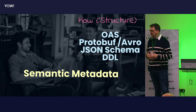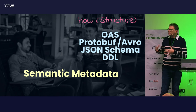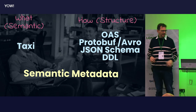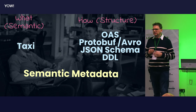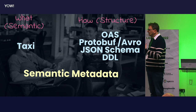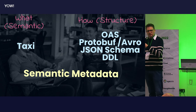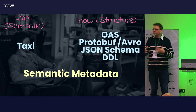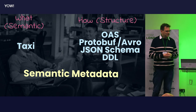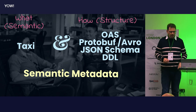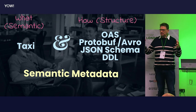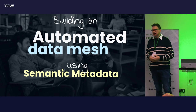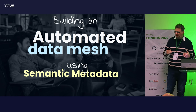That's why we want semantic metadata — metadata that enriches our existing specs to describe the 'what': the semantics. And that's what Taxi is. It's a metadata language for describing data and services — not so much about how to interact with them, but what you'll find when you get there, how the data interacts and how it relates. I'm going to talk about how to use these two things in combination to build an automated data mesh using semantic metadata.